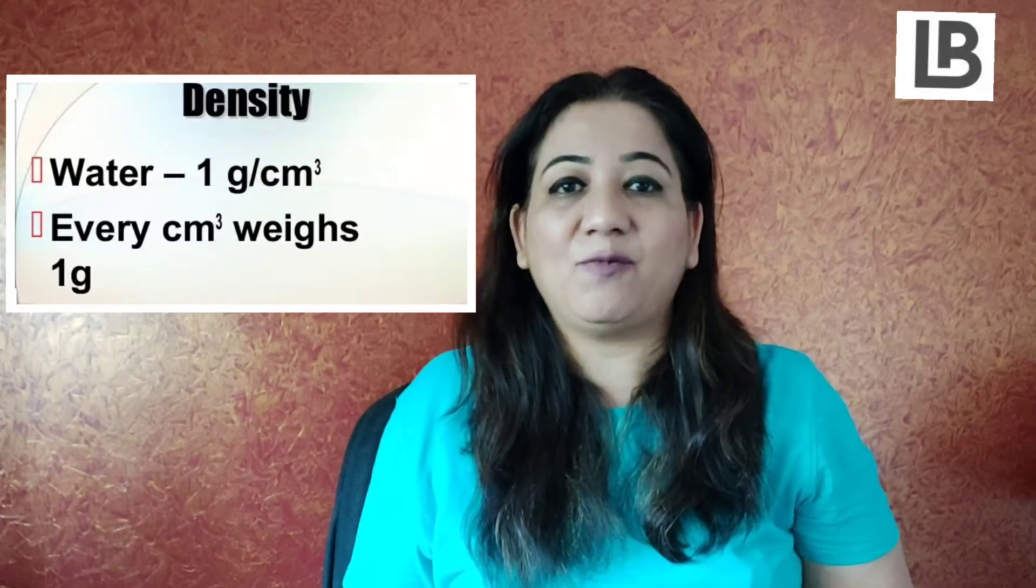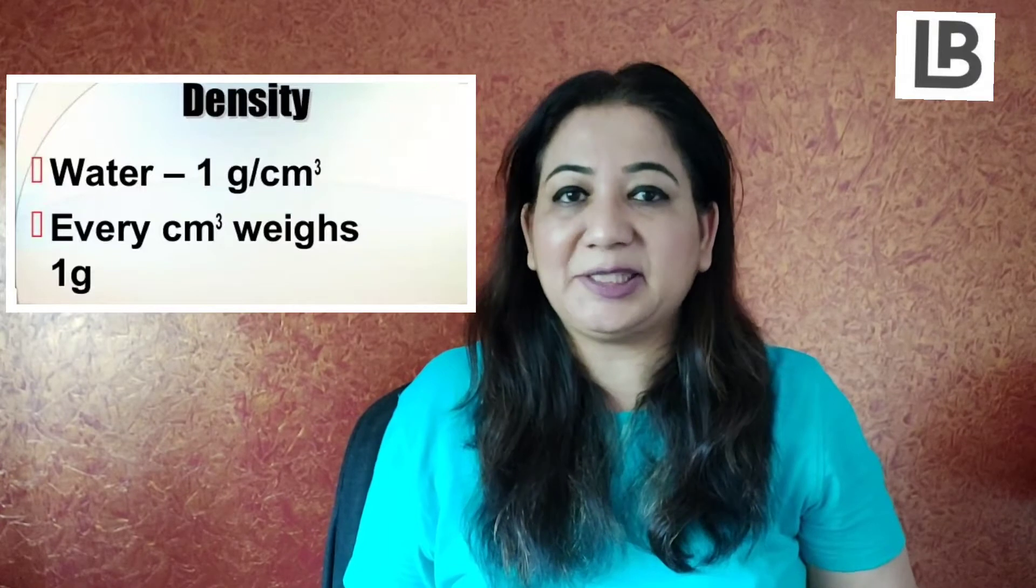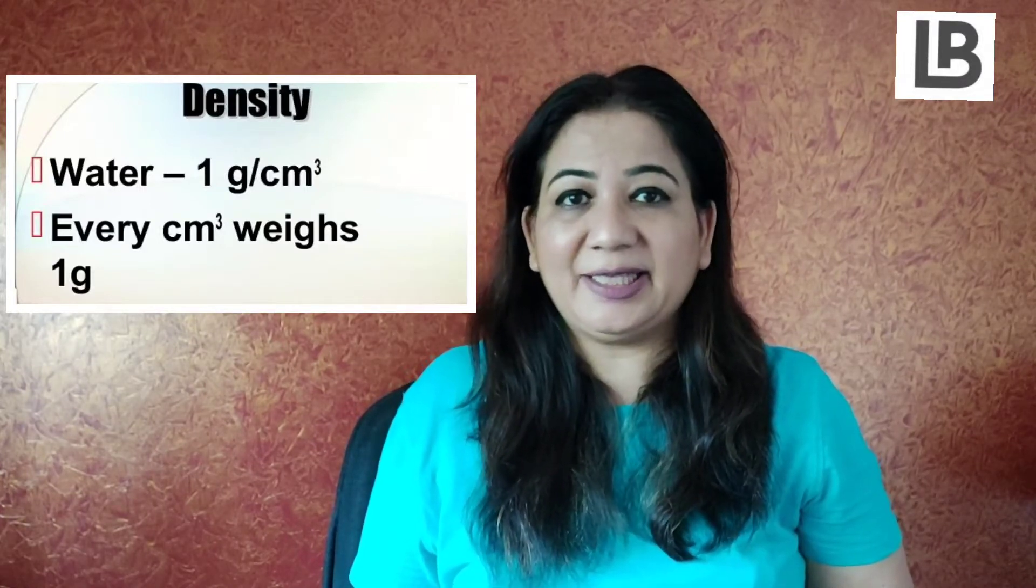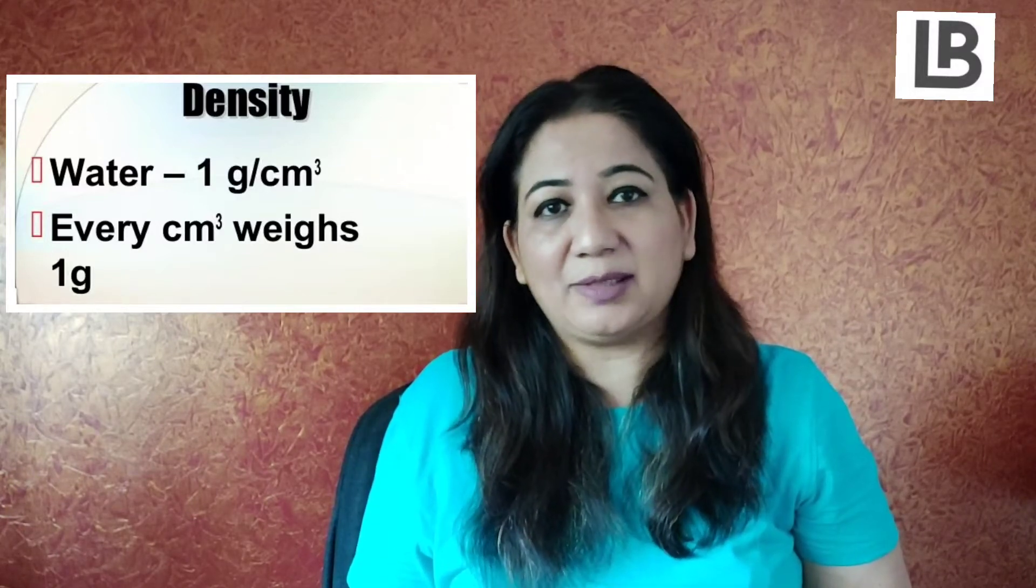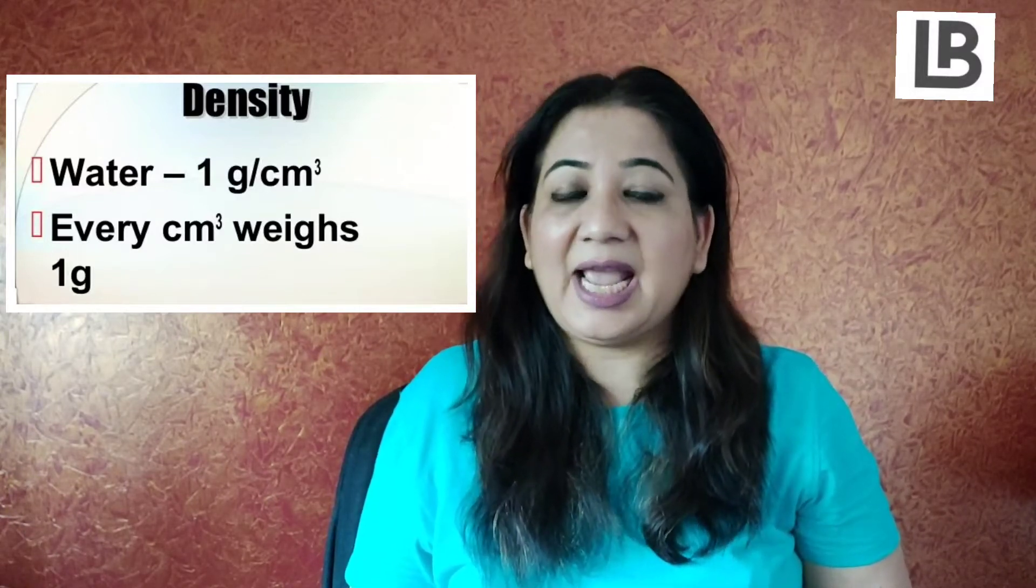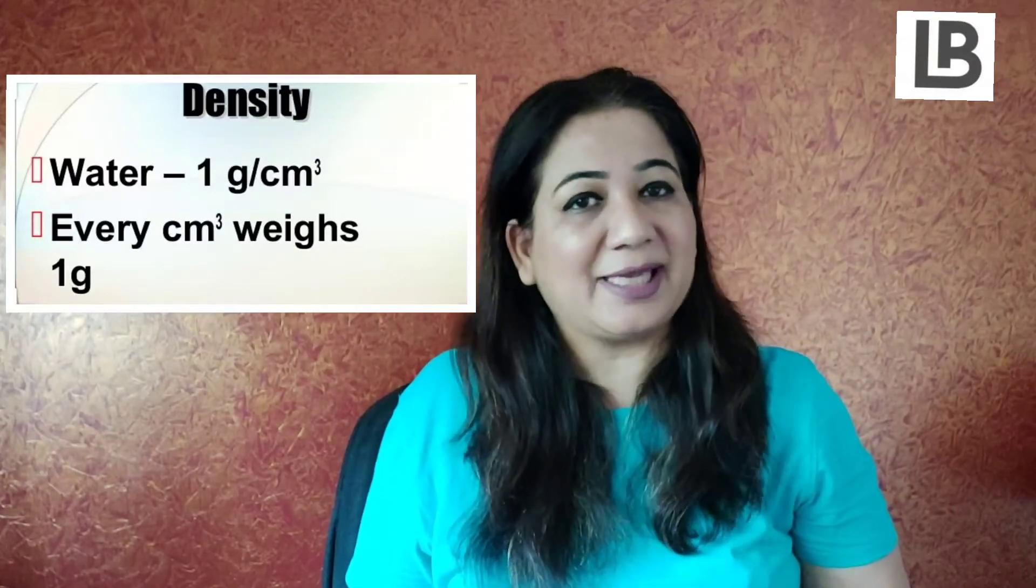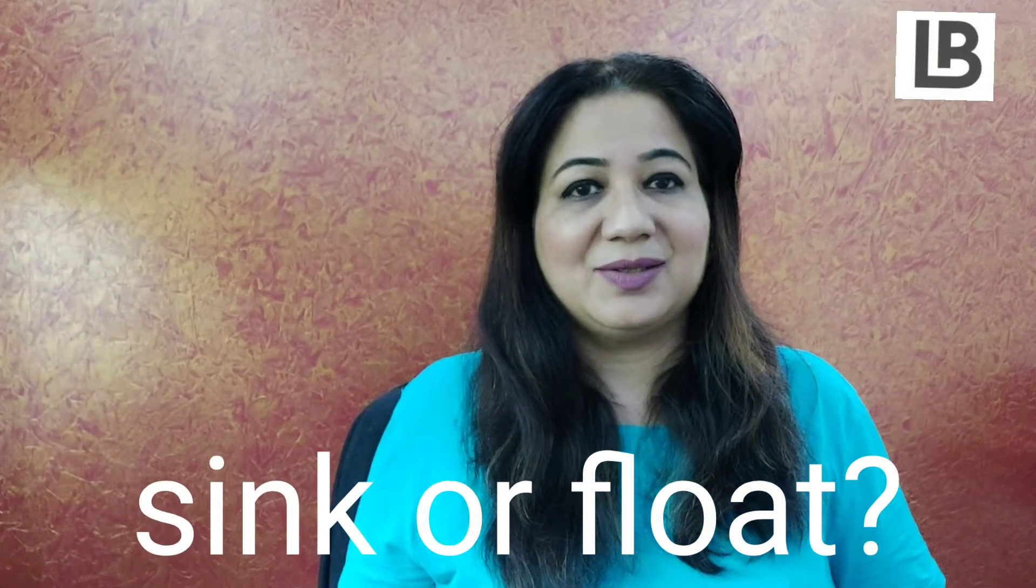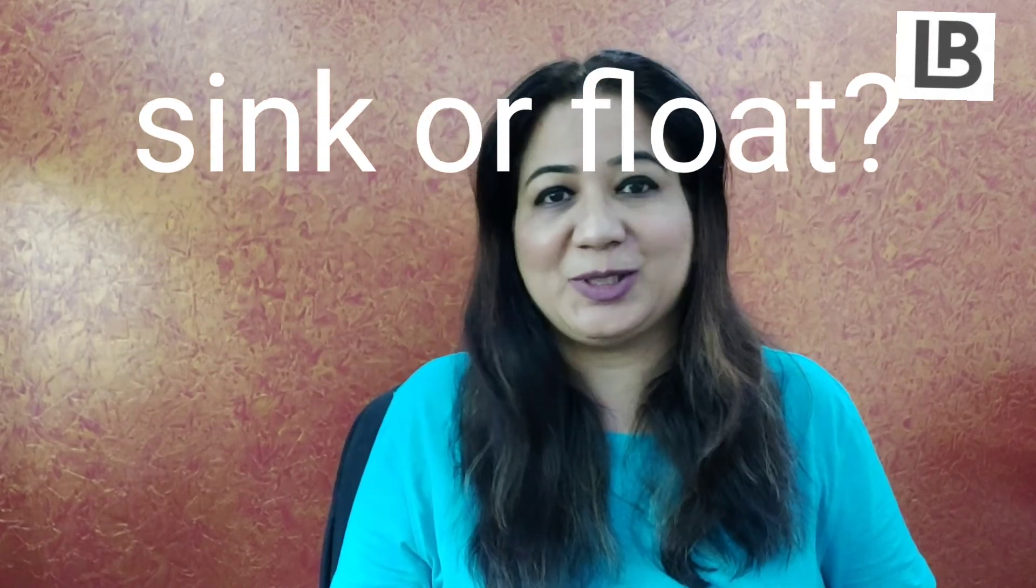The density of water is 1 gram per cubic centimeter. So anything which is less dense than this will float on the surface of water, and anything which is more dense than this will sink in water. So now it's time to find out what sinks and what floats on water.